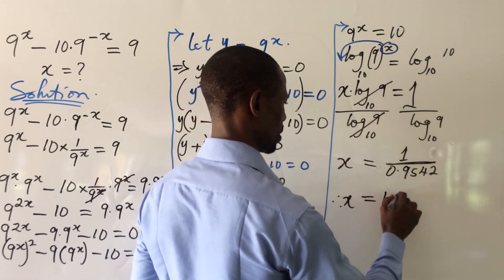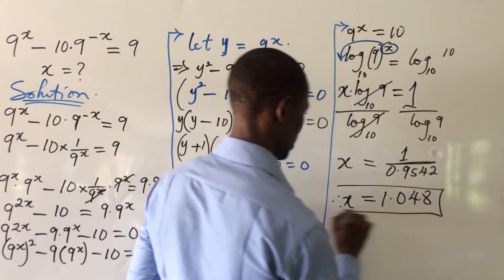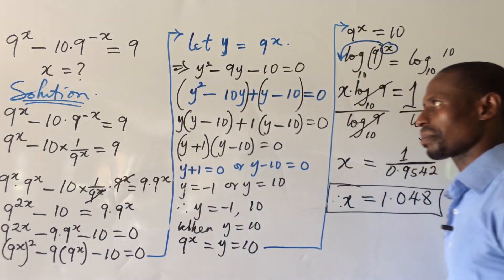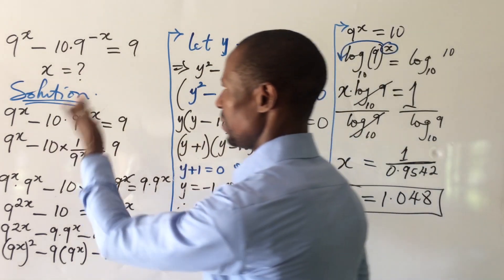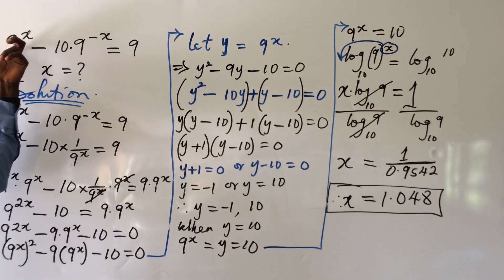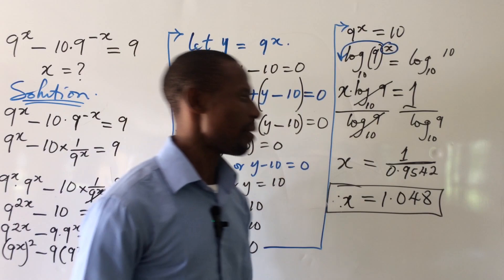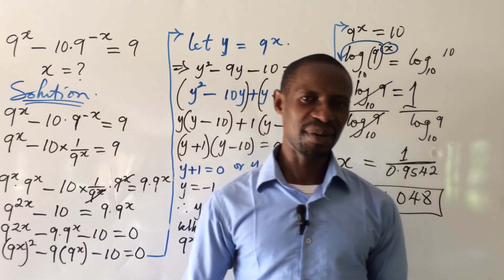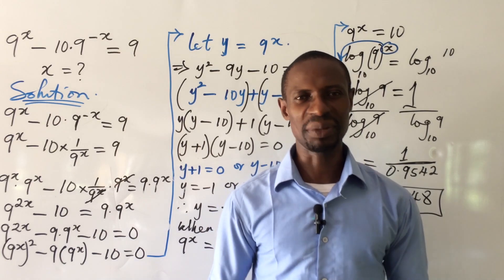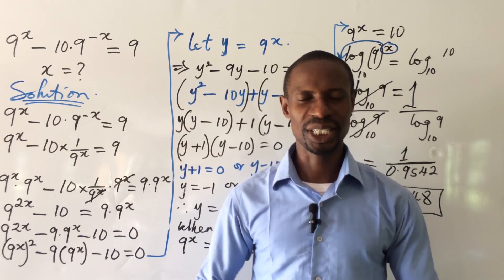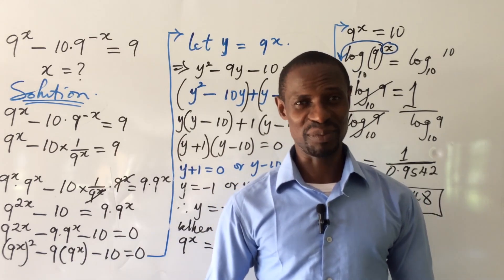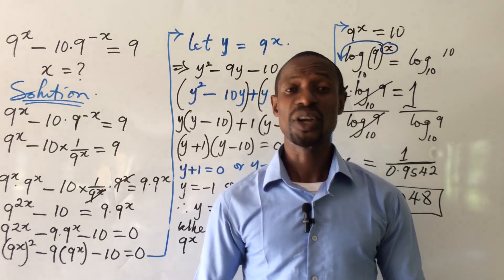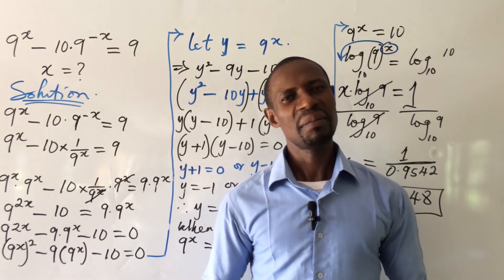Dividing 1 by 0.9542 gives x approximately equal to 1.048. This is the value of x that satisfies our exponential equation. I've verified this answer and it gives the correct approximate value. If you learned something, give the video a thumbs up and share with family and friends. This is Online Maths TV — my name is Jigs, your tutor. I love you — bye for now!